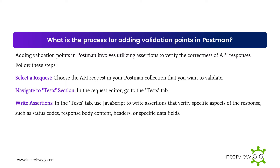What is the process for adding validation points in Postman? Adding validation points in Postman involves utilizing assertions to verify the correctness of API responses. Steps: select a request from your Postman collection, navigate to the Tests tab in the request editor, then use JavaScript to write assertions that verify specific aspects of the response — such as status codes, response body content, headers, or specific data fields.